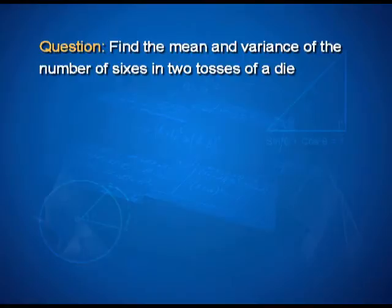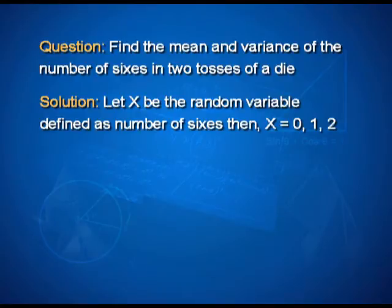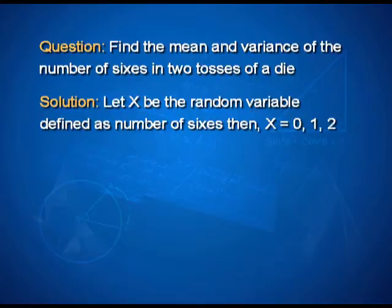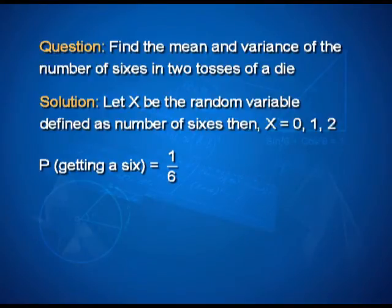Here we are talking about mean and variance of a random variable. First, let us define what the random variable is. Let x be the random variable defined as the number of sixes. When I roll a die twice, I can get a six on both dice — meaning x equals 2 — or I may get 6 on one of the dice so x equals 1, or 0 when neither die shows a 6. So x takes the values 0, 1, and 2. What we now need are the corresponding probabilities.